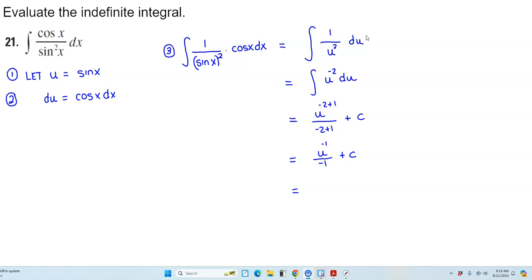So that's the same thing as saying this entire thing is negative. And then u to the negative 1 is the same thing as 1 over u plus c.